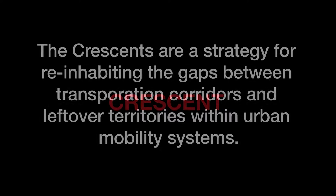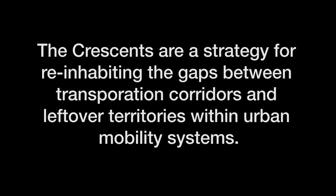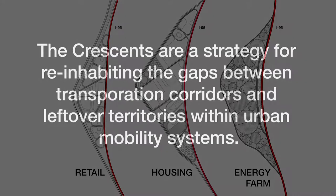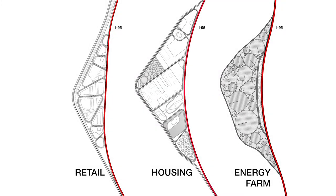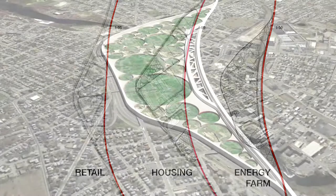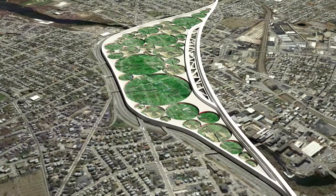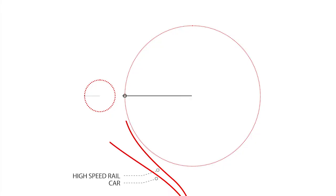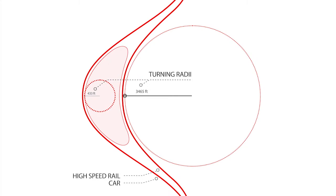Crescent. The Crescents are a strategy for re-inhabiting the gaps between transportation corridors and leftover territories within urban mobility systems. A diagram shows retail, housing, and energy farm land parcels nestled between the transportation corridors. An animation illustrates the crescent-shaped parcel created between the inner elbow of a curving highway and the gentle turn of a high-speed rail line.